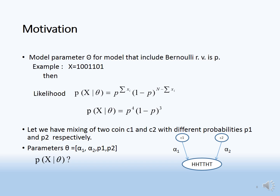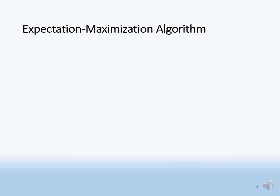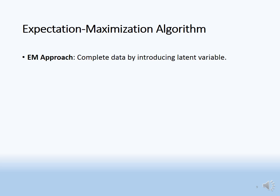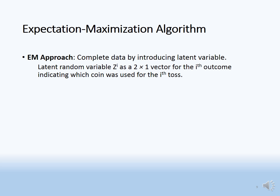This is not as simple as the single-coin case. For this we use the EM algorithm to find the probability of x given theta. The EM approach: we complete the data by introducing a latent variable z, which is a two-by-one vector.